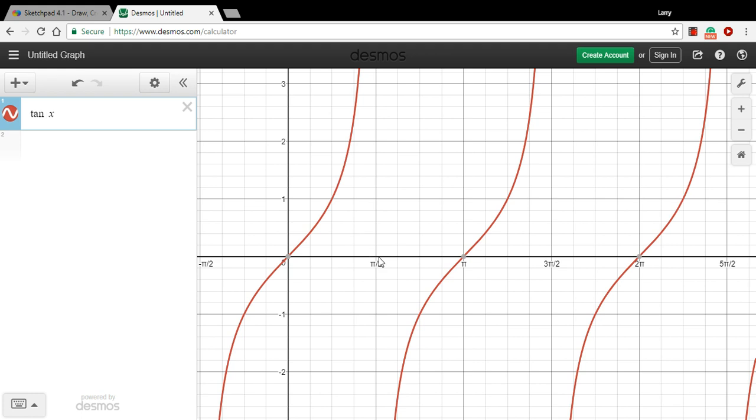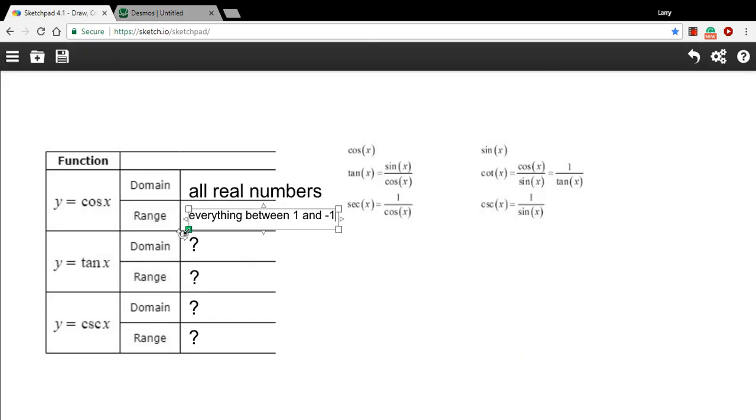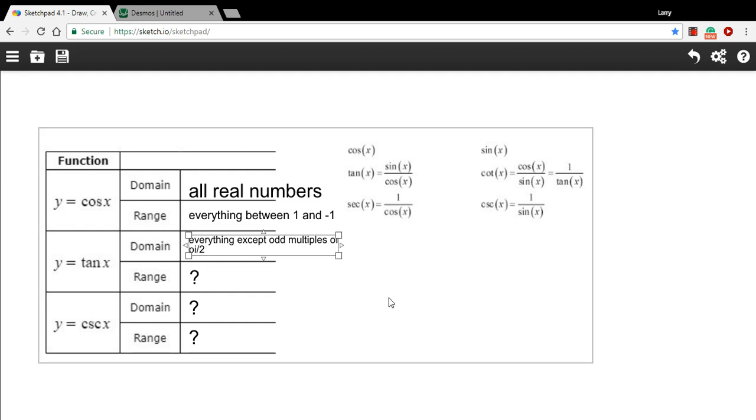So the domain, the x values, is going to be everything except those asymptotes. So we can write that as everything except the odd multiples of pi over 2. Okay. So there's tangent.